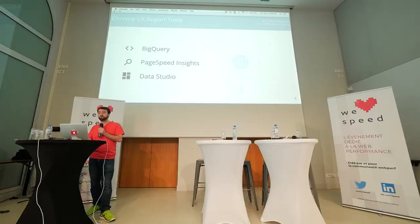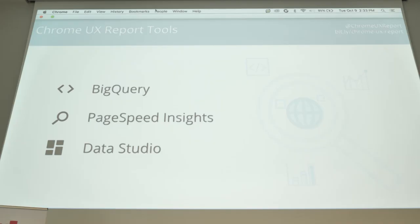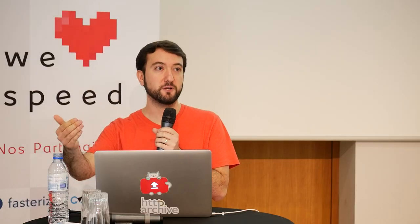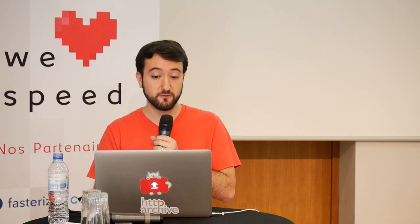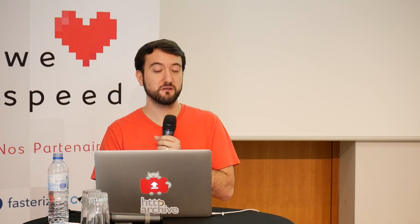I mentioned that there are three tools that Google maintains to help you get access to the data. The first is BigQuery — a queryable database on the Google Cloud platform. We also have PageSpeed Insights; you can enter a URL and PageSpeed Insights will tell you prescriptive information about how to improve performance. It might suggest optimizing images or compressing content. And finally, we have Data Studio — a recent addition that's a custom dashboard of a website's performance over time. So let's dive in and see how to use each tool.